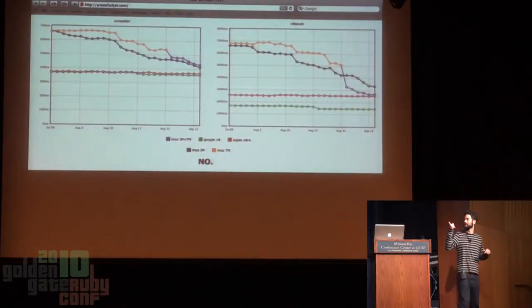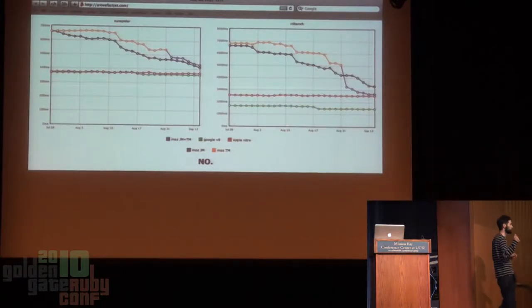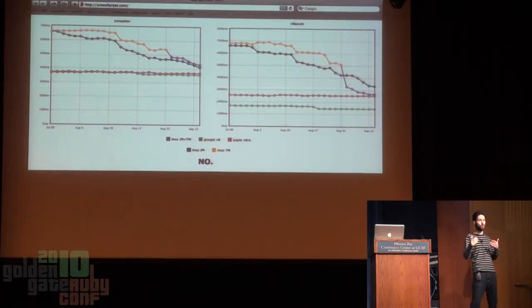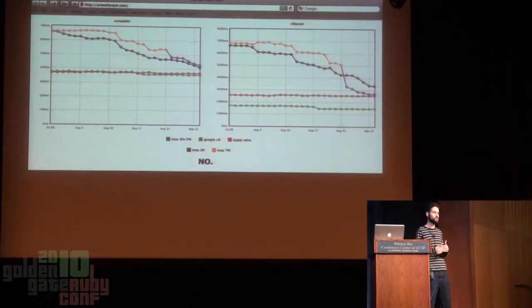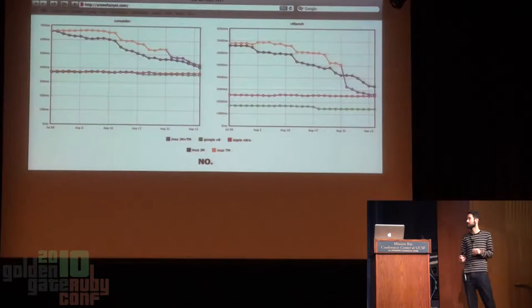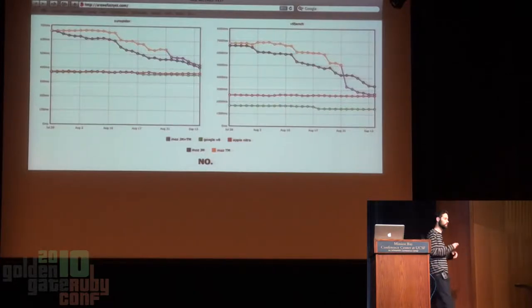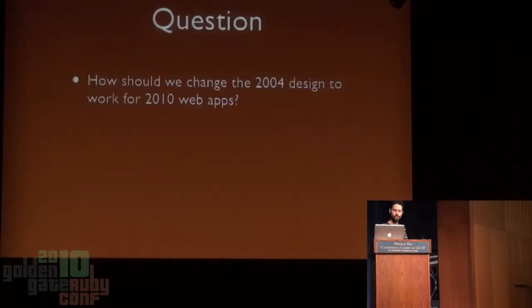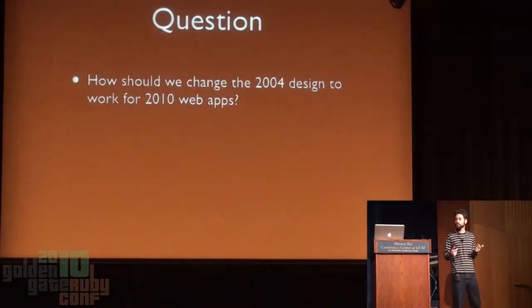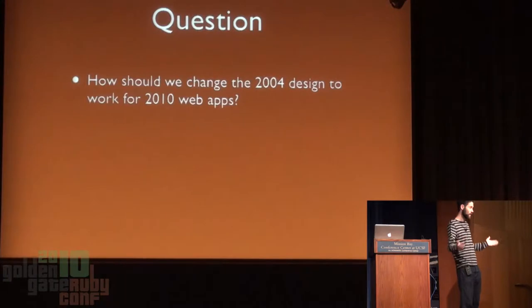This site arewefastyet.com is Mozilla's page tracking their JavaScript implementation — an example of how Chrome has pushed the rest of the industry to make their JavaScript engines faster. You can think about the amount of data you're transferring between your web app and the browser, and it may actually be faster to send computation down to the browser where they have a fast execution engine, rather than your slow execution engine on the server. If you're doing statistical analysis, you may actually be better doing that in JavaScript on the client than in Ruby on the server. So here's the question: how should we change the 2004 design — Rails and Rails-like frameworks — to work for 2010 web apps?